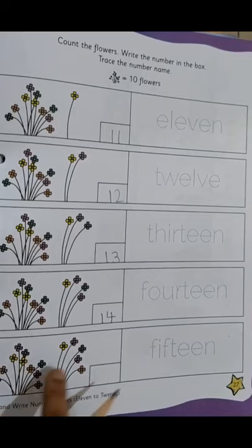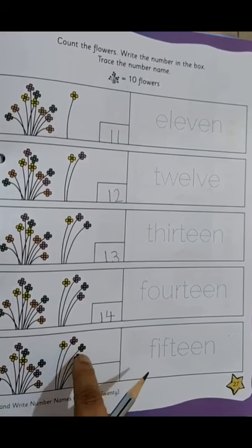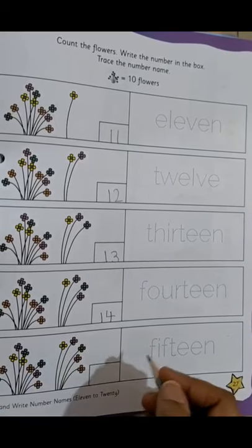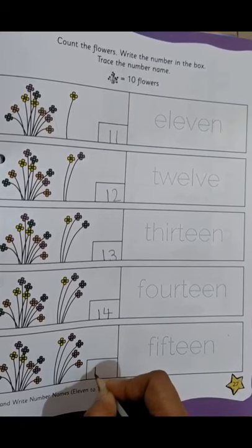Moving on to the last one. 10 flowers and let's count. 1, 2, 3, 4, 5. How many flowers are there? 5. So you will write 15 out here.